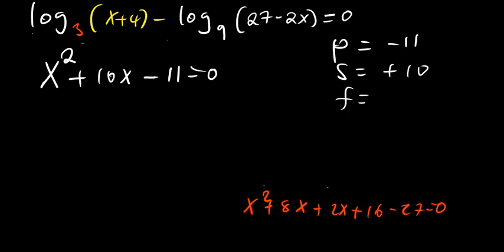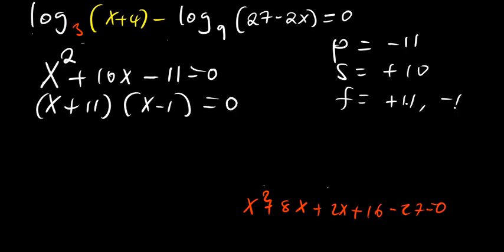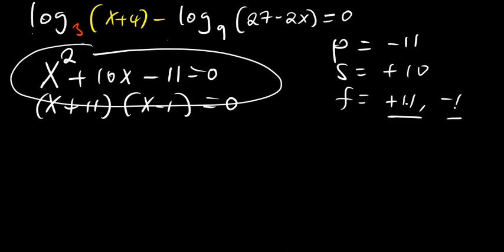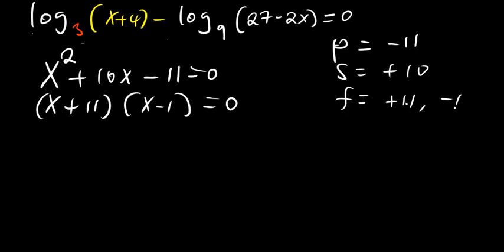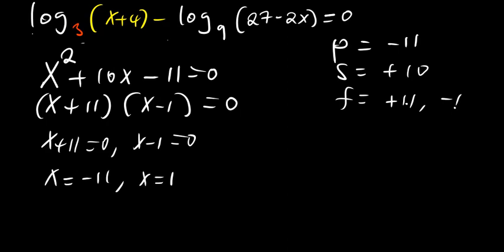The factors should be positive 11 and negative 1, so that positive 11 minus 1 gives positive 10. So that factors as (x + 11)(x − 1) equals 0. Therefore x plus 11 equals 0 giving x equals negative 11, and x minus 1 equals 0 giving x equals 1. So these are the two candidate answers.